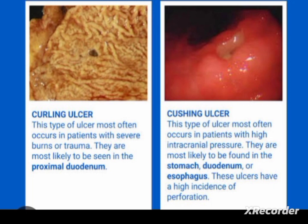When differentiating Cushing and Curling ulcers, first remember the etiology. In Curling ulcer, the main causes are burns, trauma, heart failure, multi-organ failure, and shock — all these conditions may precipitate a Curling ulcer. In the case of burns, 35% of burn patients may develop a Curling ulcer.